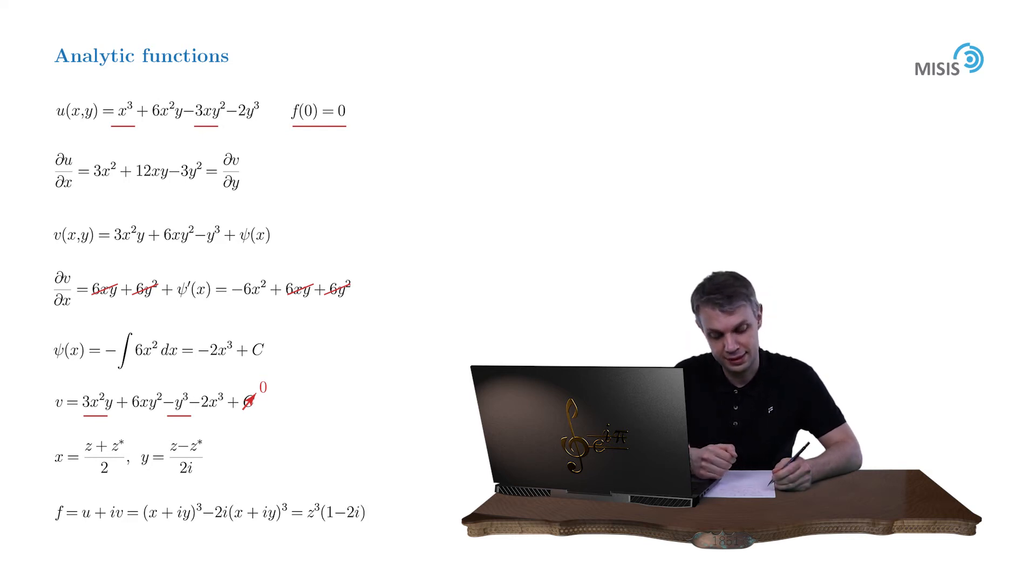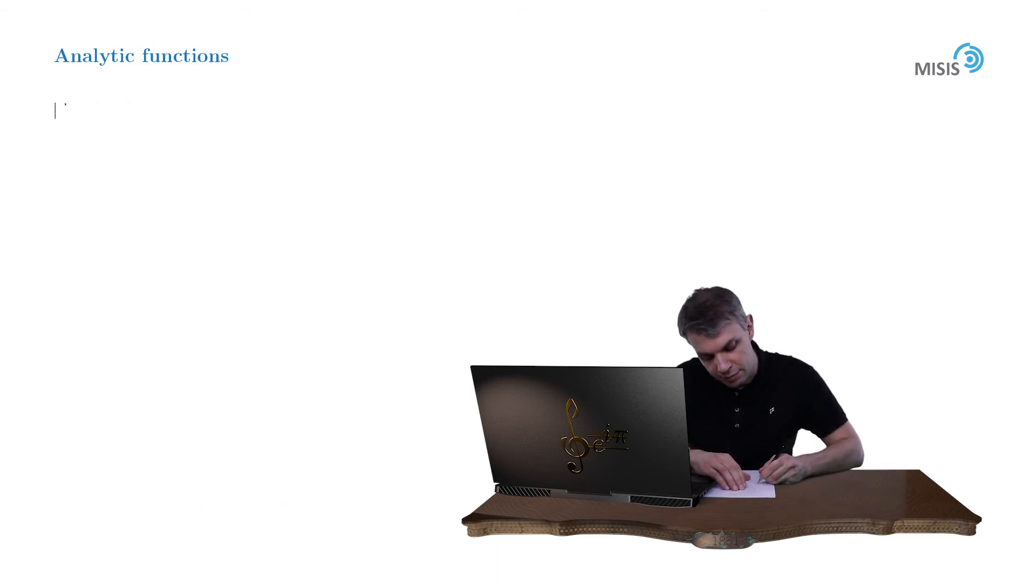So let's consider the next example. And this is going to be slightly different because now only the modulus of the function is given to us and we are asked to restore the full analytic function. So modulus of f is equal to e to r squared times cosine of 2 phi. So we see that this assignment even more unusual because the dependence of our modulus function is expressed via polar coordinates. So how would we proceed?